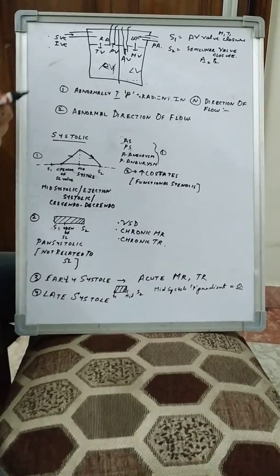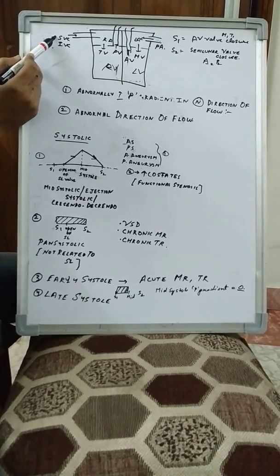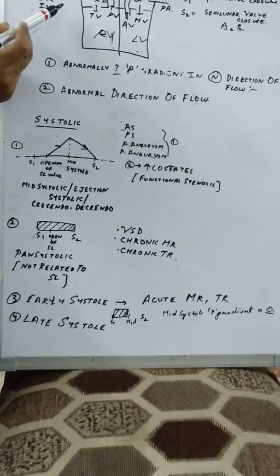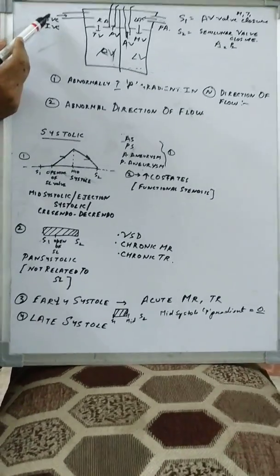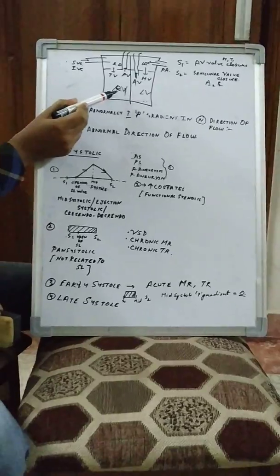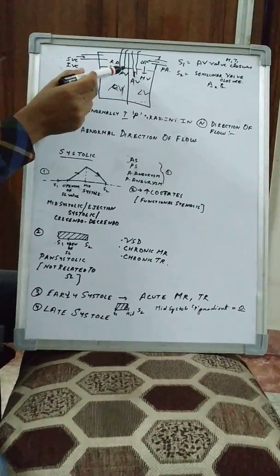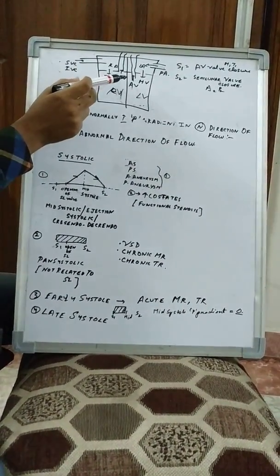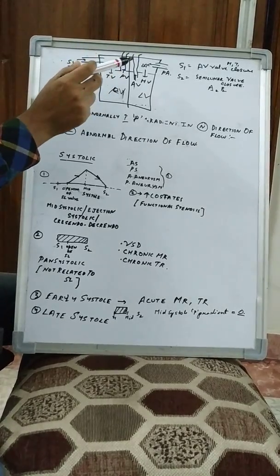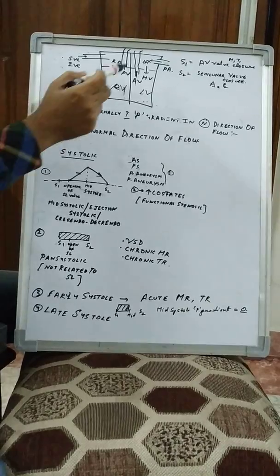Let's assume that the blood comes into our right atrium through the superior vena cava and inferior vena cava — keeping in mind that this is deoxygenated blood. Then through the tricuspid valve it travels into the right ventricle, then through the pulmonary valve it goes into the pulmonary artery, carrying deoxygenated blood to the pulmonary circulation.